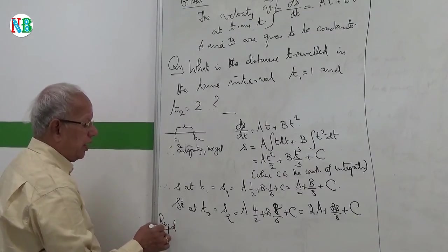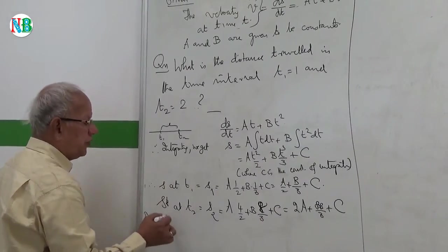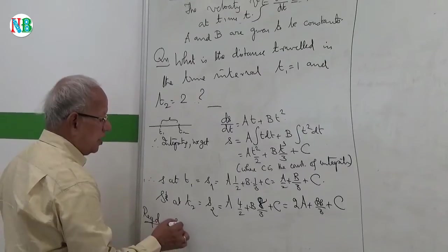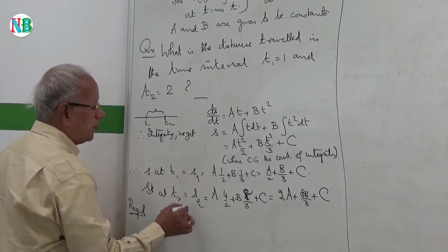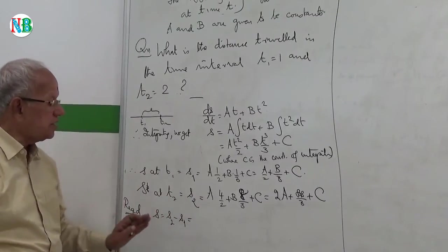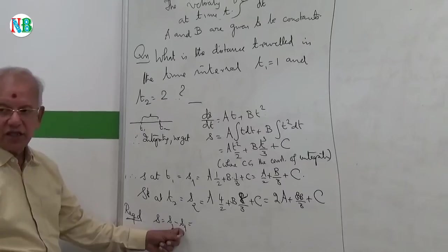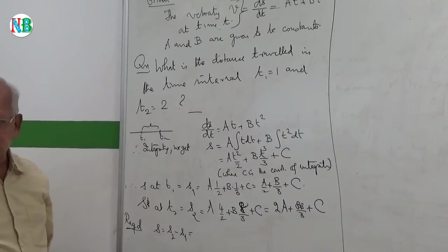And what you want is the distance traveled. So what is required? The distance traveled in the time interval t1 to t2. That is s equal to s2 minus s1. This is the distance traveled in 2 seconds, this is the distance traveled in 1 second. So the difference will give you the distance traveled in the interval 1 to 2, right?